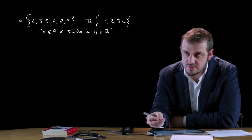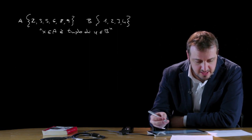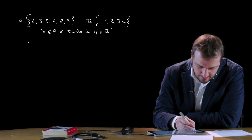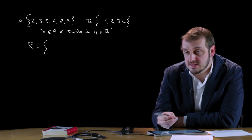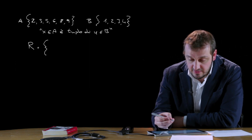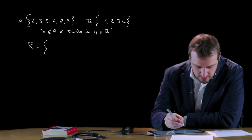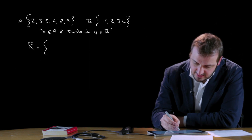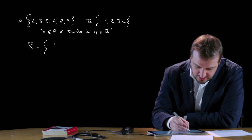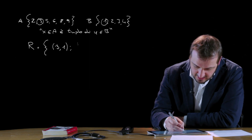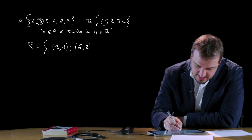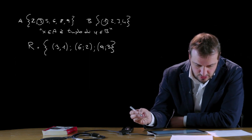Andiamo a vedere come si rappresenta questa particolare legge nelle quattro modalità differenti. Per elencazione, definiamo R questa relazione: si inseriscono sostanzialmente all'interno delle parentesi graffe gli elementi che soddisfano questa legge. In particolare, x appartiene ad A ed è triplo di y appartenente a B, quindi la coppia (3, 1), la coppia (6, 2) e la coppia (9, 3). Questa è la rappresentazione per elencazione.